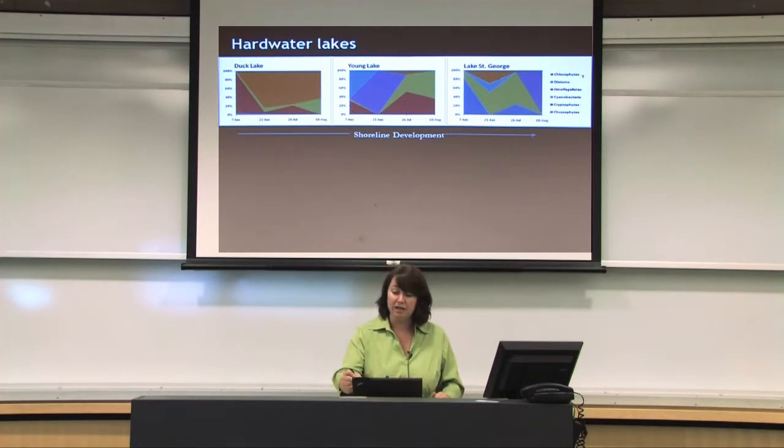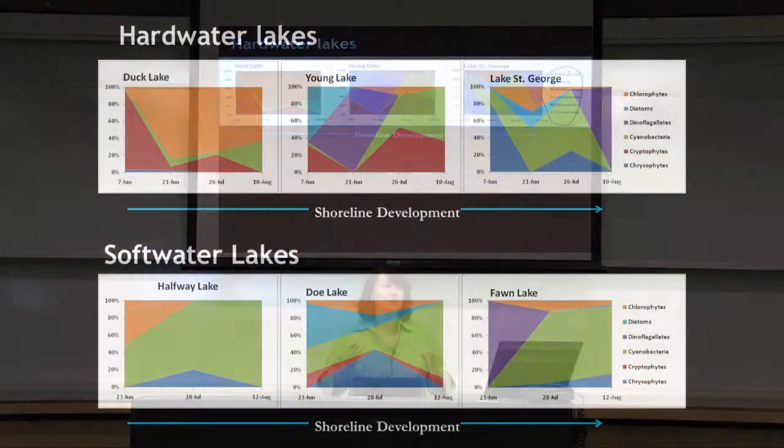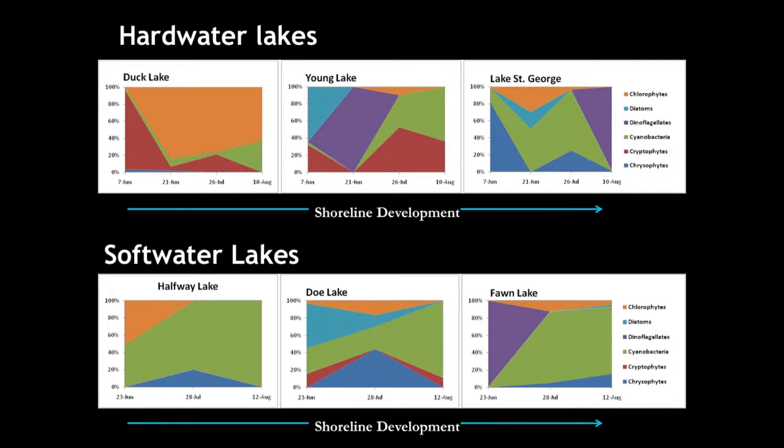However, when looking at the composition of algae — focus on the color patterns rather than individual algal group names — what you'll see is that there really are no patterns: every lake has a unique community structure. This was surprising, because I would have expected hard water lakes to have more or less similar community structures among themselves, and similarly for soft water lakes. All samples were collected on the same day, so seasonal differences don't explain it. There's still a lot we need to know and understand about algal community structure.